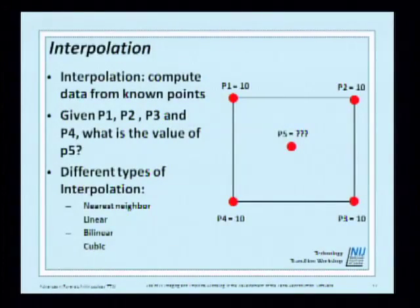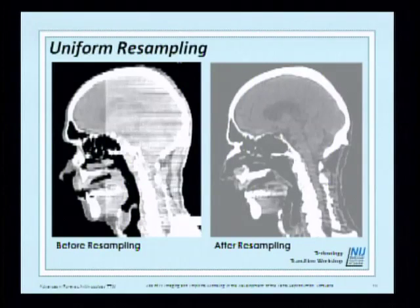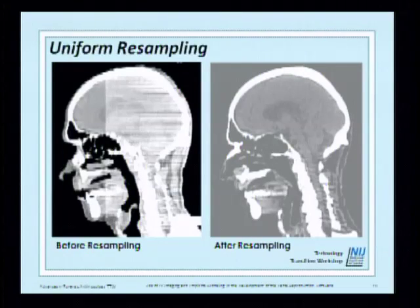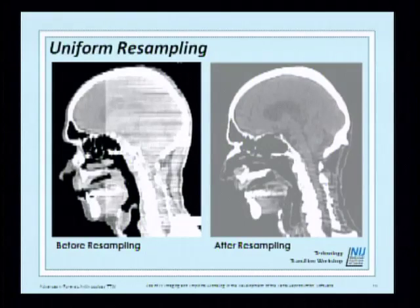Interpolation basically estimates the value of intermediate points using surrounding values. There are different types: nearest neighbor, linear, bilinear, cubic, and others. Here is an example — before sampling, this is a sagittal view. As you can see, it's very difficult to work with, even for someone knowledgeable about anatomy. In this study we were not interested in internal structures, but finding a way to overcome this problem was important.